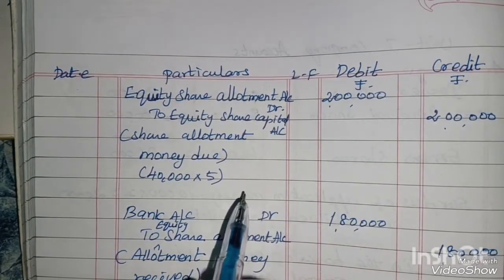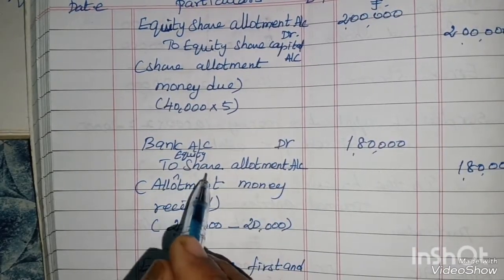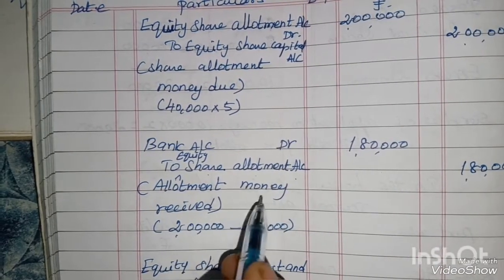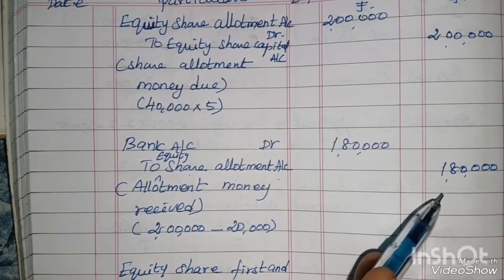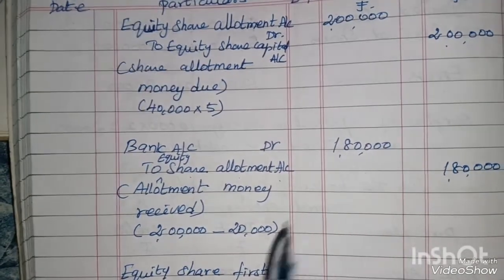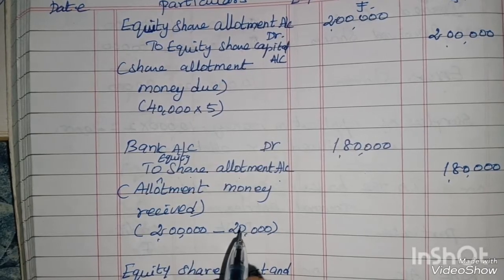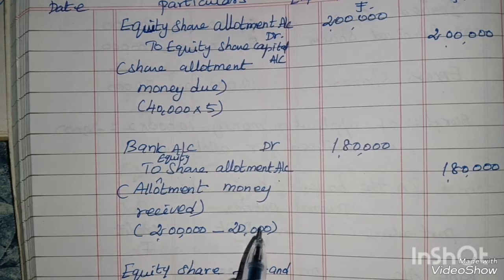Allotment money received entry: Bank account debit to equity share allotment account. Allotment money is Rs.2,00,000, but we already have excess application money of Rs.20,000 adjusted. So the bank receipt for allotment is Rs.1,80,000. The Rs.20,000 from excess application is already accounted for.